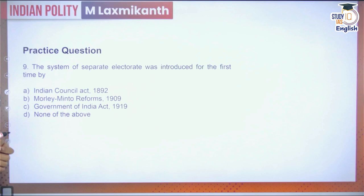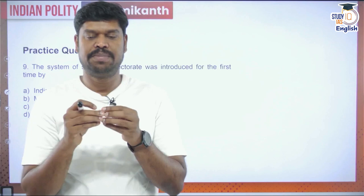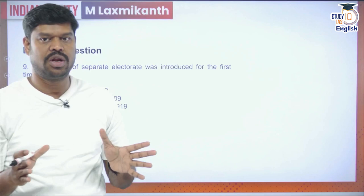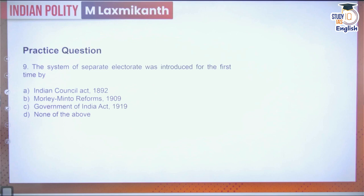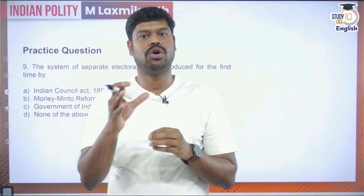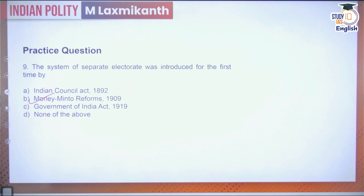Question 9: When was the system of separate electorate introduced for the first time? Separate electorate means people of a particular community can only elect members from that community. This was part of the British policy of divide and rule, and was introduced for the first time by the Indian Councils Act 1909, during the Morley-Minto reforms. Lord Minto is therefore called the father of communal electorate. Answer: option B.